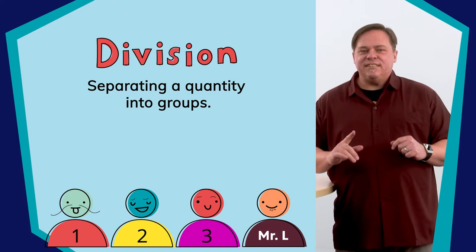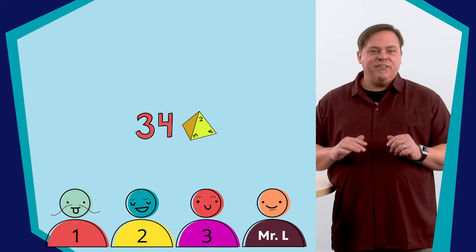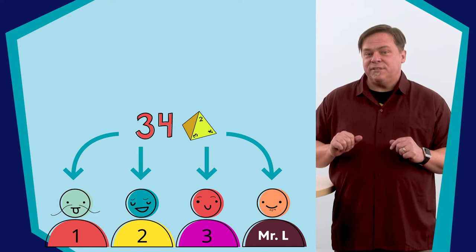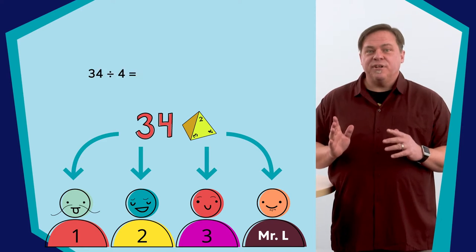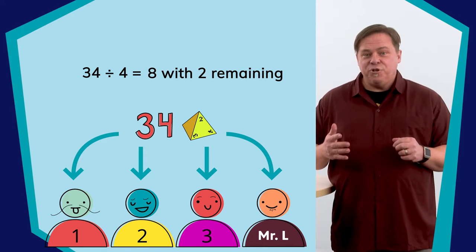Let's take this example with the dice. I had 34 dice, and I was dividing those dice into four groups. So that equals eight with two remaining.